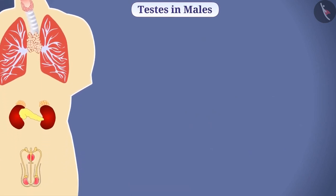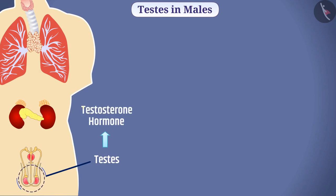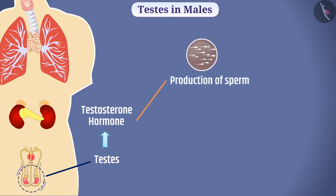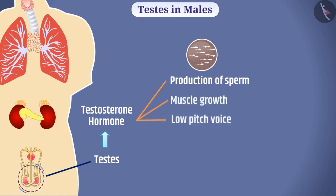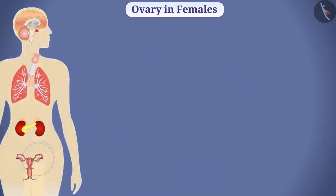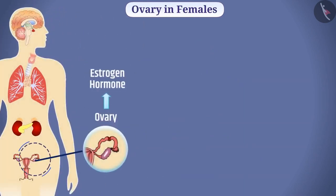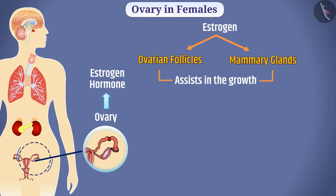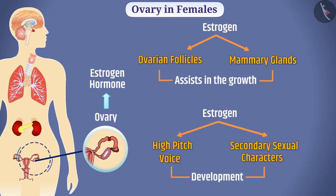In males, a pair of testes secretes testosterone hormone. Testosterone helps in the production of sperm. It also stimulates muscle growth, low-pitched voice, aggressiveness, and growth of facial and axillary hair. A pair of ovaries in females secretes estrogen hormone. Estrogen assists in the growth of ovarian follicles and mammary glands, and causes development of high-pitched voice and secondary sexual characteristics in females.